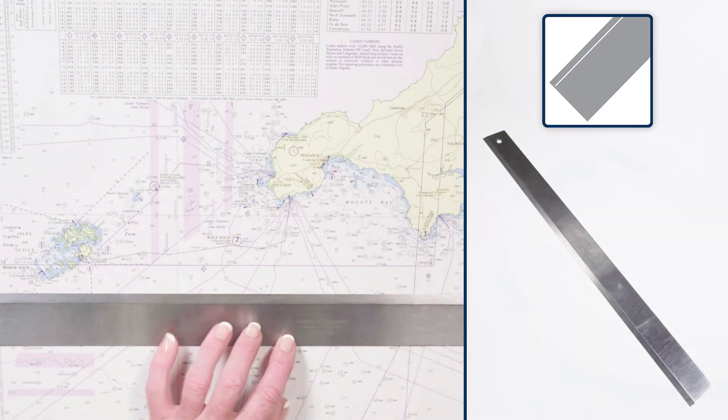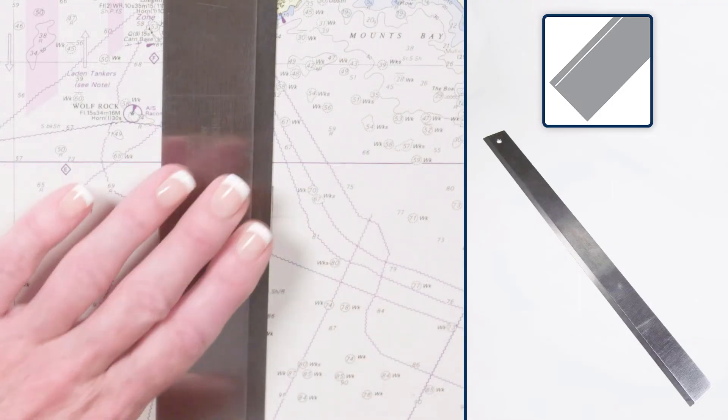A steel straight edge is a useful tool for finding a position on a chart.